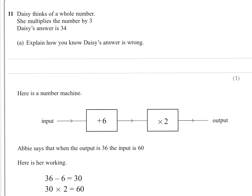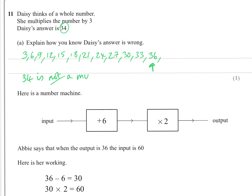Question eleven: Daisy thinks of a whole number, multiplies by 3, and gets 34. Explain why this is wrong. If you multiply by 3, the result must be in the 3 times table. Writing out the 3 times table, by the time you pass 34 you're at 36 — 34 doesn't appear. So 34 is not a multiple of 3.